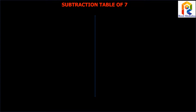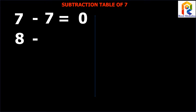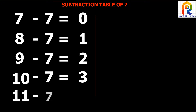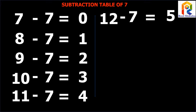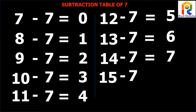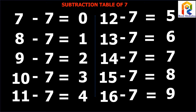Subtraction Table 7. 7 minus 7 equals to 0. 8 minus 7 equals to 1. 9 minus 7 equals to 2. 10 minus 7 equals to 3. 11 minus 7 equals to 4. 12 minus 7 equals to 5. 13 minus 7 equals to 6. 14 minus 7 equals to 7. 15 minus 7 equals to 8. 16 minus 7 equals to 9.